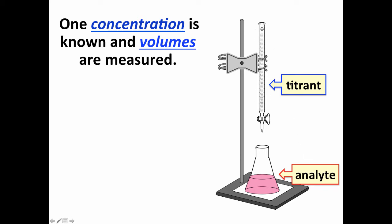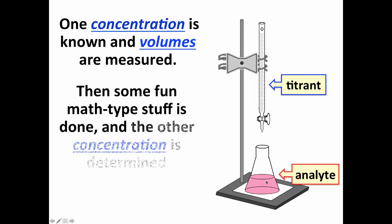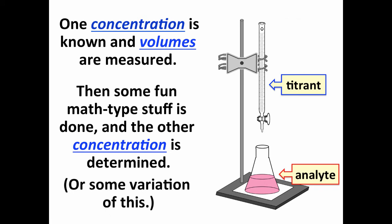We know our concentration of titrant, and then we add a known volume or measured volume to get to our endpoint where the color has changed. That allows us to determine the concentration of the unknown substance, the analyte.